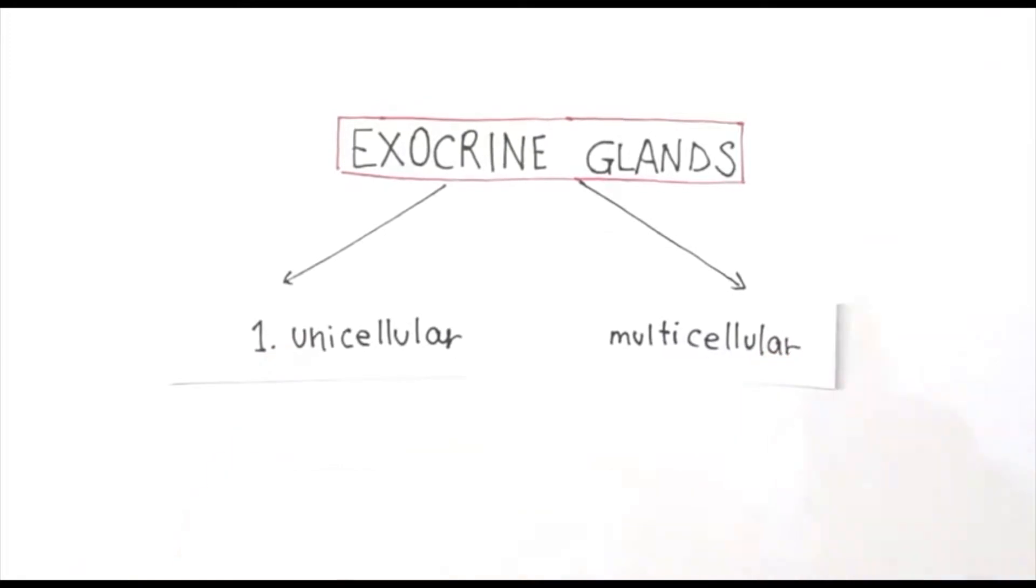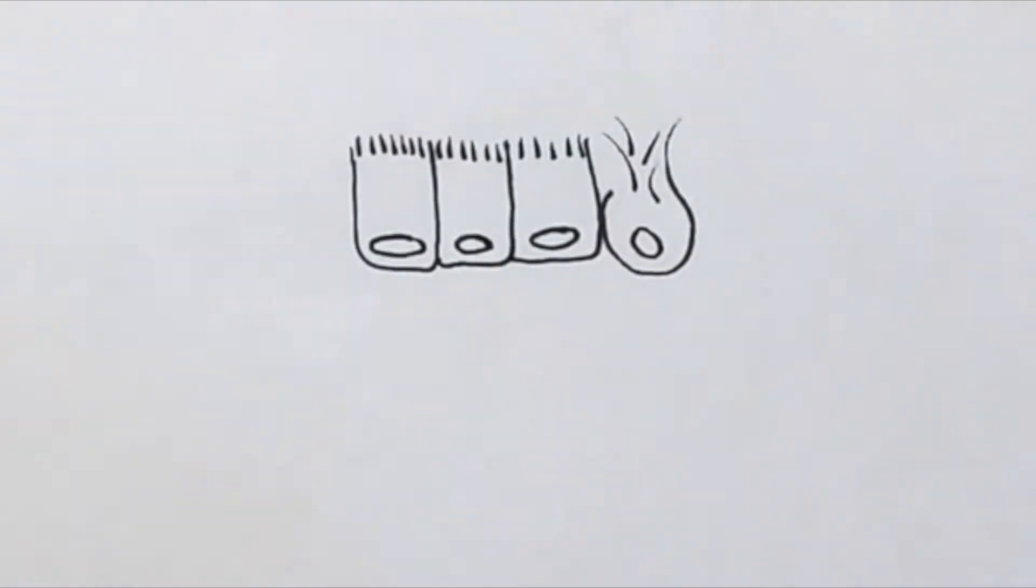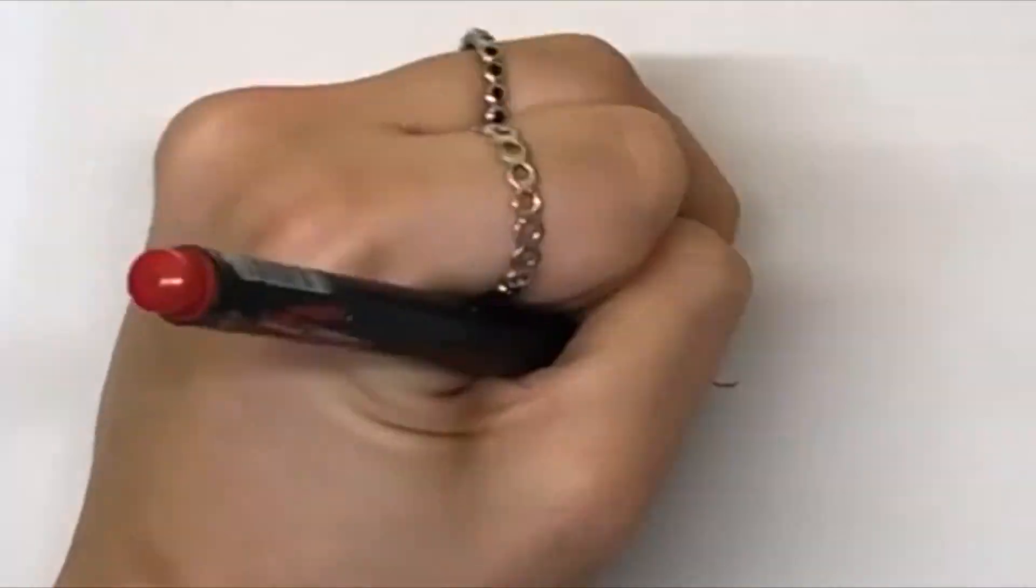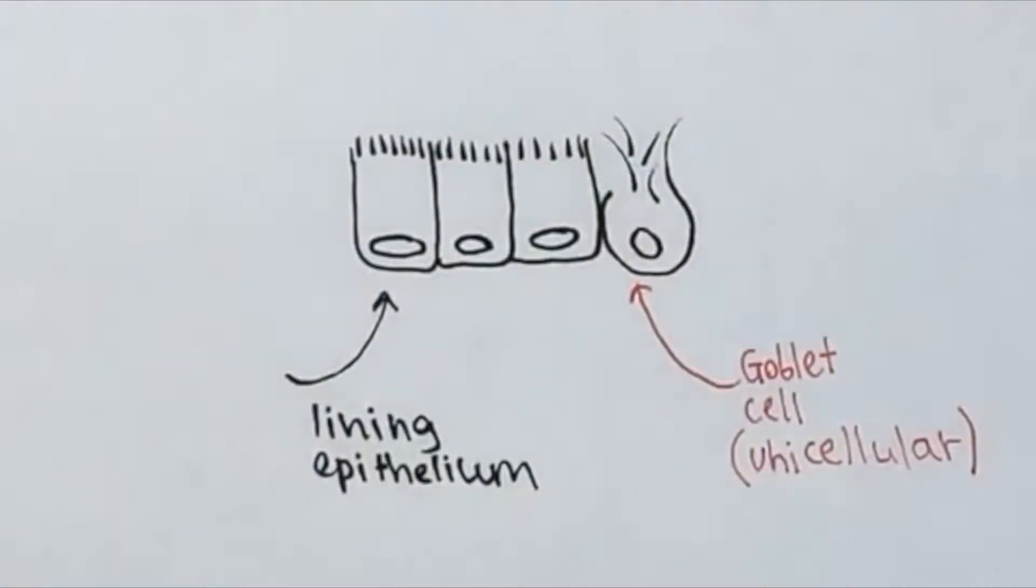First, we can divide them into unicellular and multicellular. Unicellular glands are also called goblet cells and are inserted in a lining epithelium with a free border either in hollow organs or on the skin surface. Their secretion is mainly composed of glycoproteins aimed to maintain the epithelium lubricated and hydrated.